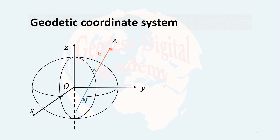The point is how to define position for the point based on the geodetic coordinates or based on the reference ellipsoid. Consider this intersectional line between the local meridian and equator. This angle, which is actually the angle between the normal to the ellipsoid and the XOY plane or equator, is called geodetic latitude. And the angle between the reference meridian and the local meridian, which is measured on the equator, is called geodetic longitude.